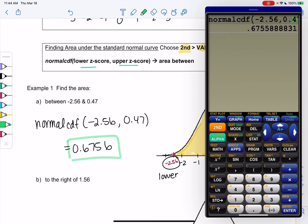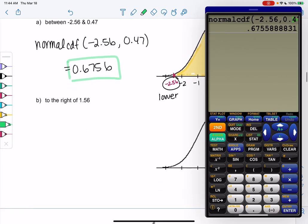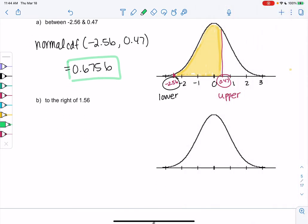So right now we're just kind of learning z-scores in the curve. But eventually we'll convert regular data into this so we can find areas with real data. So let's find area to the right of 1.56. So 0, 1, 2, 3 on the right side. 1.56 would be about halfway. So this is just a tail.